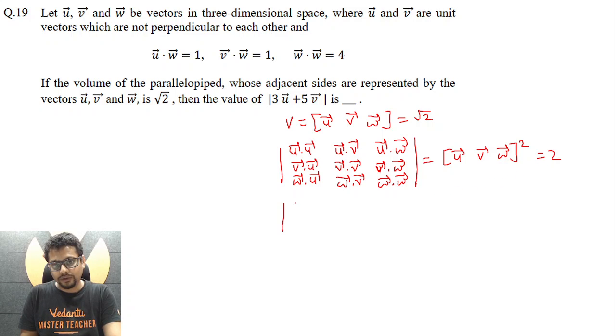Now u vector dot u vector is supposed to be one because it is a unit vector. u vector dot v vector, since both are unit vectors, and let's say angle between them be theta, so it becomes cos theta. u vector dot w vector is known to us as one. v vector dot u vector, again cos theta, this becomes one because v vector is a unit vector. v vector dot w vector is given as one. w vector dot u vector again is given as one. This is one, and w vector dot w vector essentially is four. So this turns out to be two.